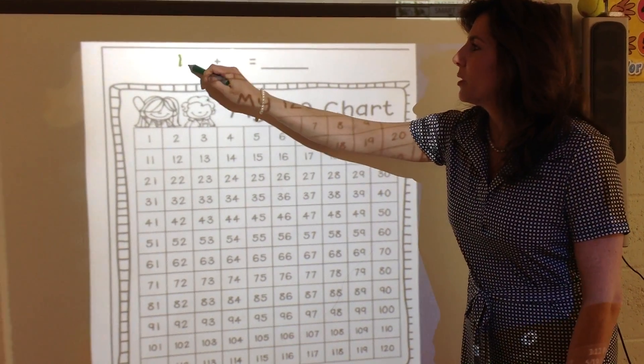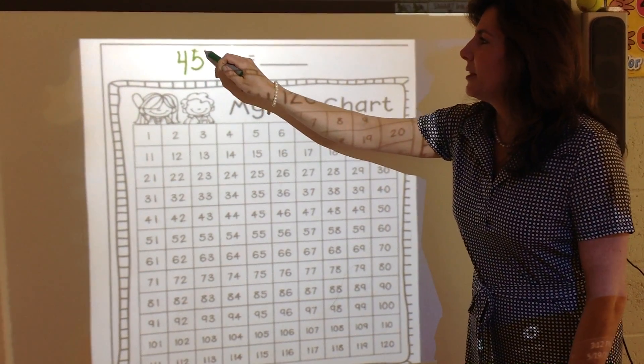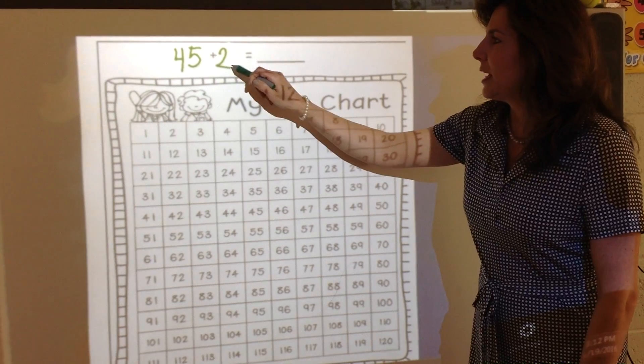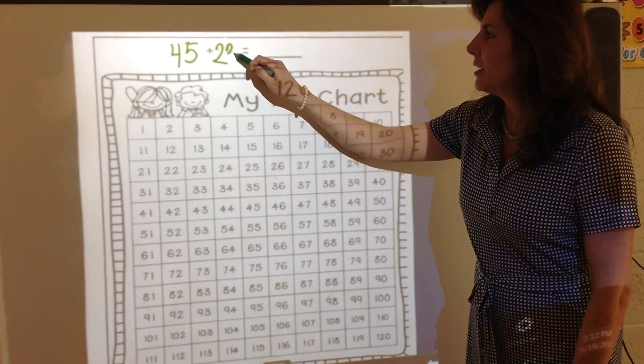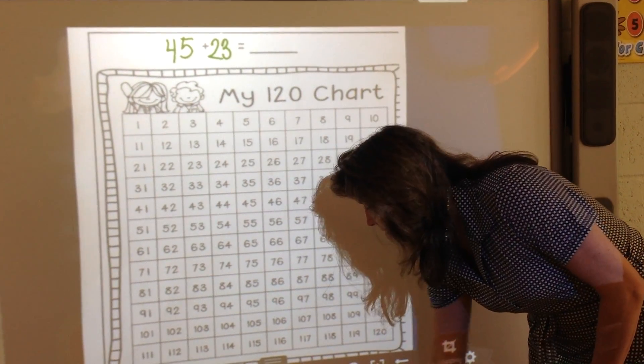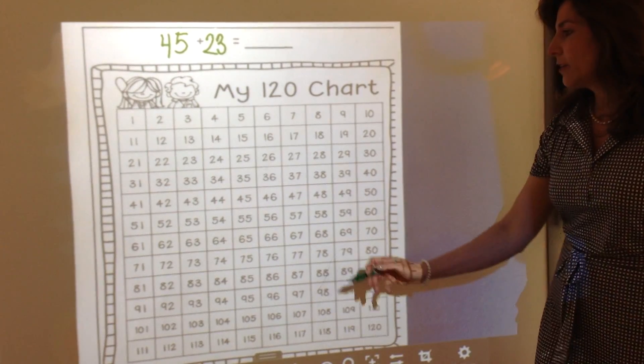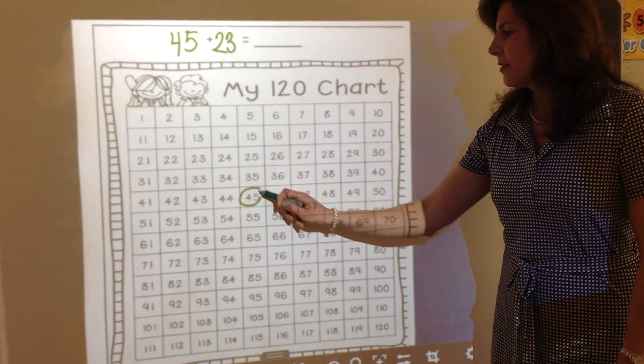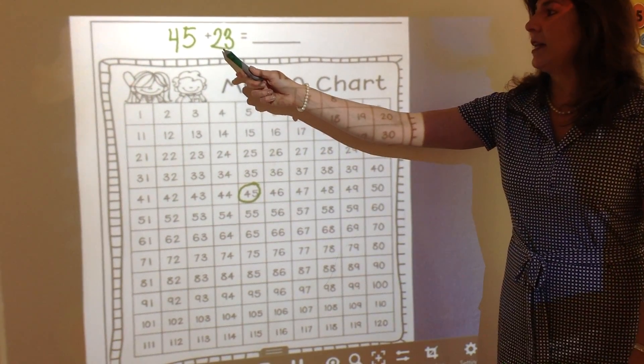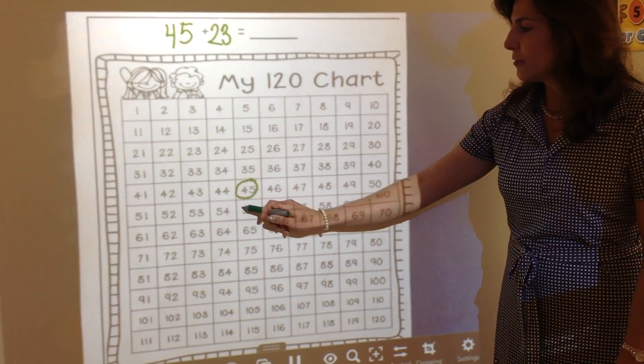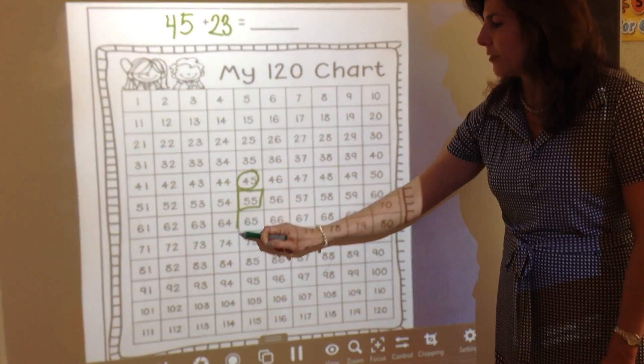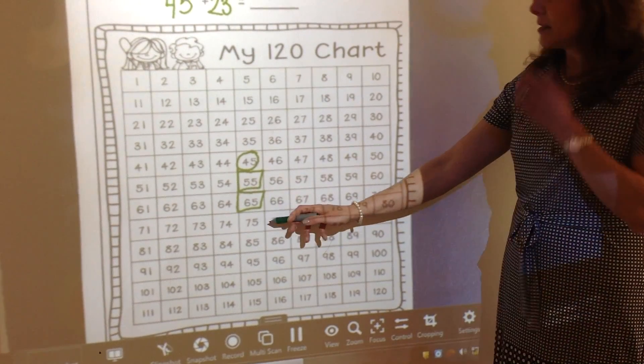Let's say we start on 45, and this time we'll add 23, which is 2 tens and 3 ones. We start on 45, and we're adding 2 tens. We move down to 55, that's 10 more. Another 10 brings us to 65.